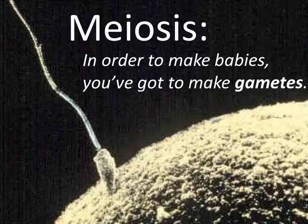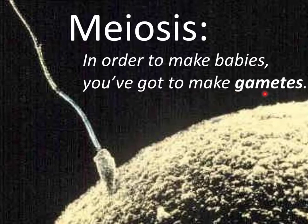Do you like making babies? So do all other organisms. But making babies is a complicated process, particularly for organisms like us that use sexual reproduction. In order for us to make babies, we have to make special cells called gametes. These sex cells have male and female versions, such as sperm and egg.